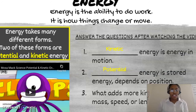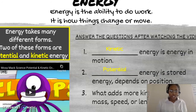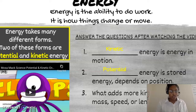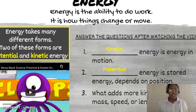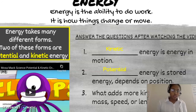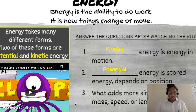This is just a quick PowerPoint — no more than three slides — on what potential and kinetic energy is. Let's first start by defining energy. Energy is the ability to do work; it is how things change or move. This slide has a video but the platform I'm using won't play the sound, so I'll just post it on the link. Energy takes many different forms, and these two forms are called potential and kinetic energy.